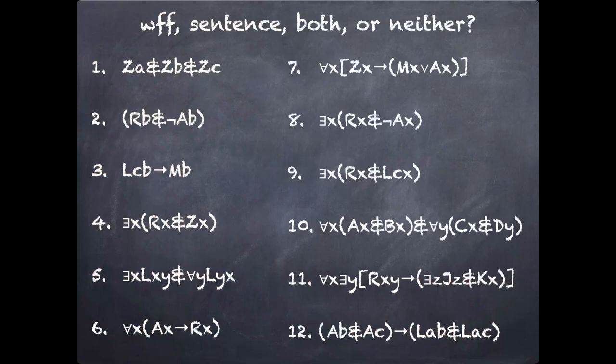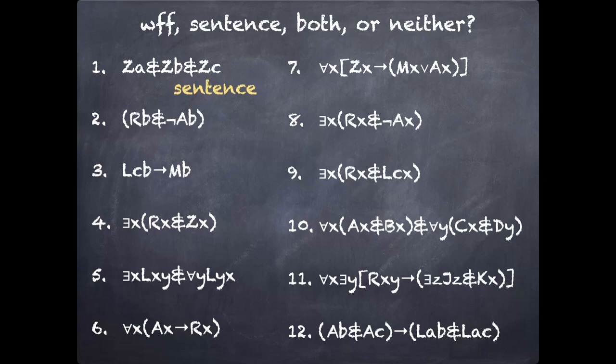All right, let's see. So number one, ZA and ZB and ZC, this is a sentence. It's not a wff because there are no parentheses around the conjunctions. Remember, we can get rid of those parentheses. That's one of our notational conventions. But it means it's a sentence, not a wff. There are no variables, and so there are no free variables.